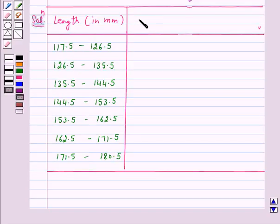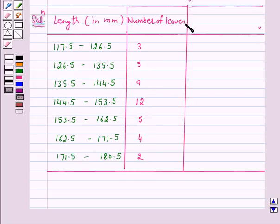Now, number of leaves, that is the frequency of each class is given to us. We will find the cumulative frequencies of all the classes. Let us make a column for cumulative frequency. So, for this class, it is 3. For the class 126.5 to 135.5, it is 3 plus 5, which is 8.